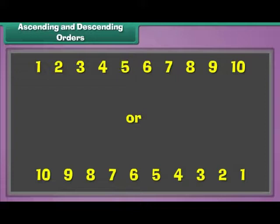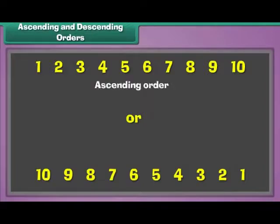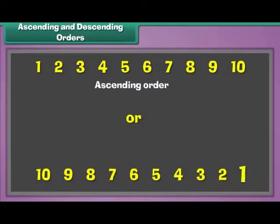Arrangement of numbers from the smallest to the largest is called ascending order. Arrangement of numbers from the largest to the smallest is called descending order.